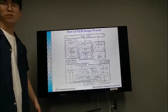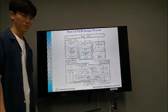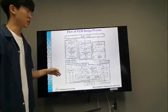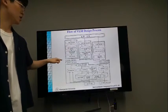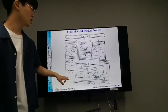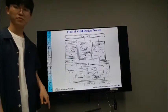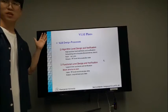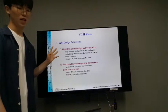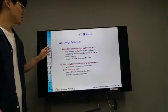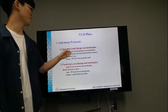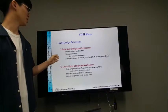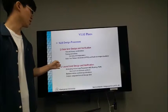And this is flow of VLSI design process. It can be divided into three according to design specification. This is back-end design and this is front design. And in VLSI plans, there are four types in progress: algorithm level design verification, functional level design verification, gate level design verification, and layout level design verification.